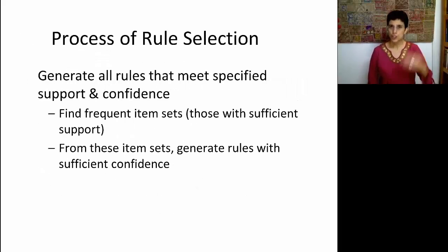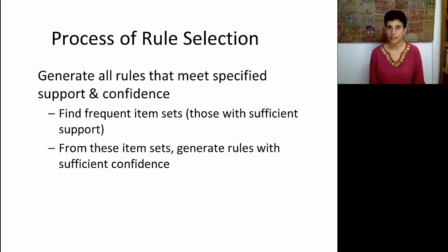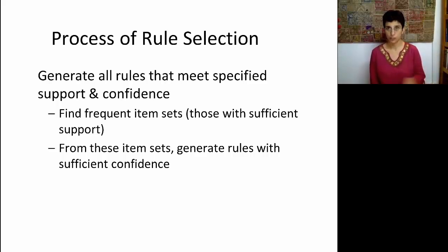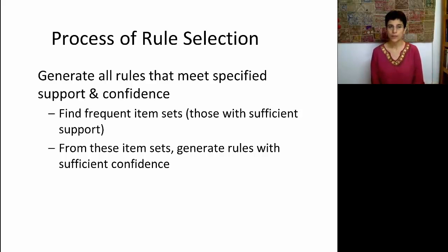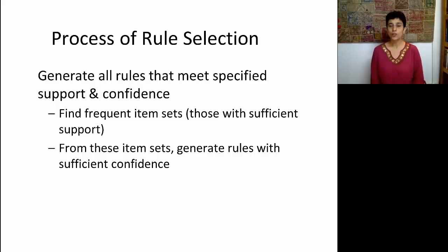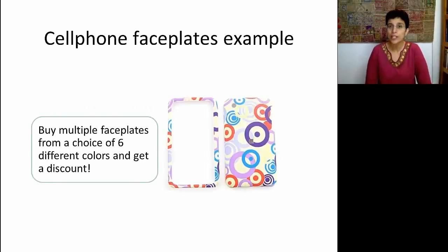The idea in association rules is to generate all rules using the a priori algorithm with a support threshold, and then use confidence to also threshold the rules. This helps us find frequent item sets with sufficient support. Among these, we look at rules with sufficient confidence, so we also set a threshold on confidence. Once that happens, we look at the lift ratios and choose the rules that have high lift.